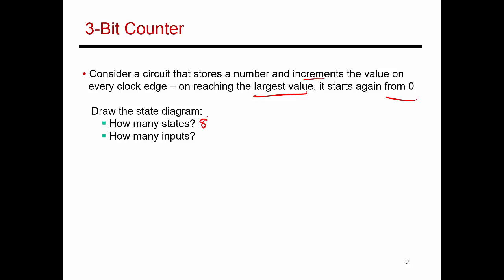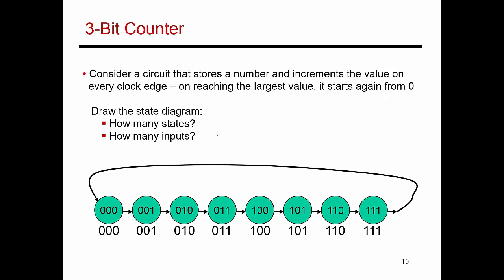I'm going to have eight states in this case. How many inputs are there? There's only one clock input; there's no other input coming in. So this is what the finite state diagram looks like. I start at state zero and move all the way to state one — you'll see there is really no label on these arcs because there is no input. At every single clock edge, I move from one state to the next. When I've reached the final 111 state, I loop back on the next clock edge to the zero state. This is a very simple finite state diagram.